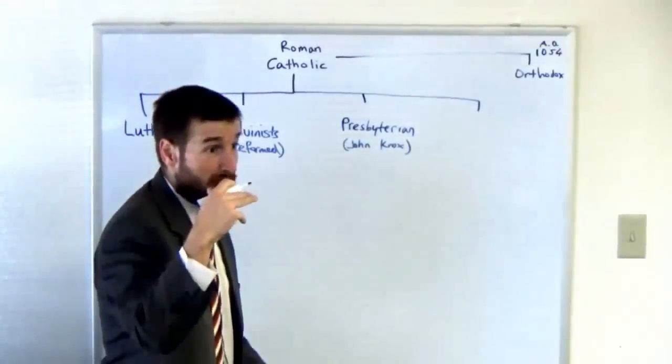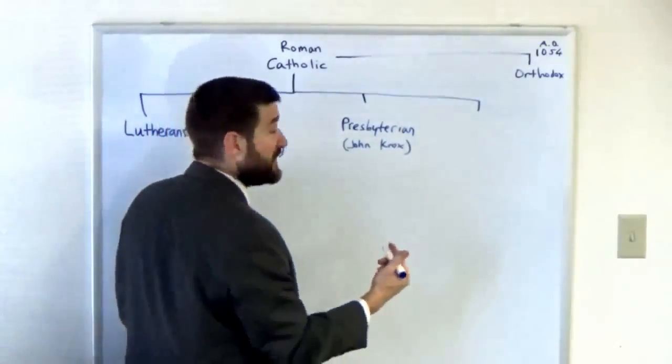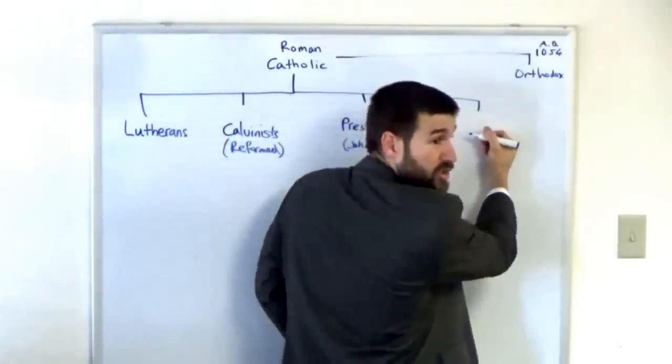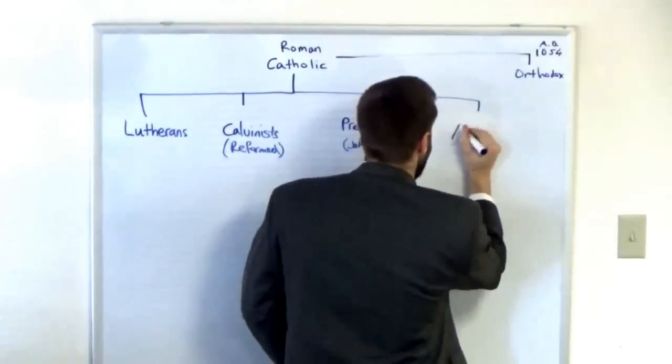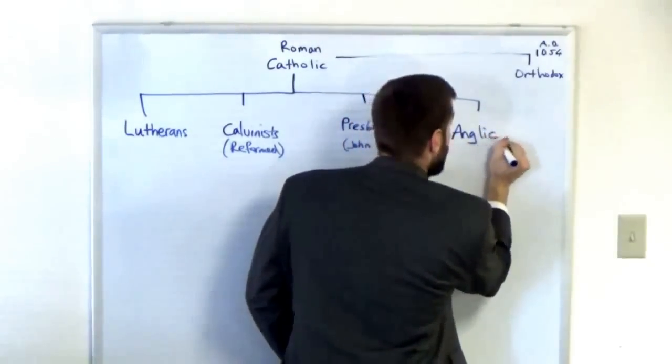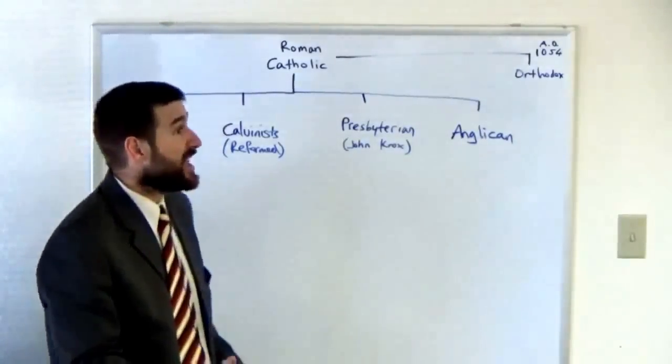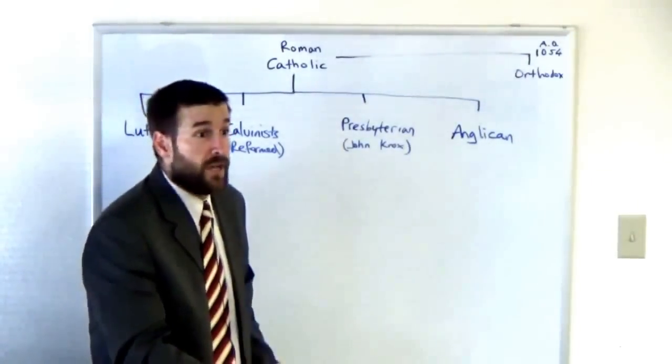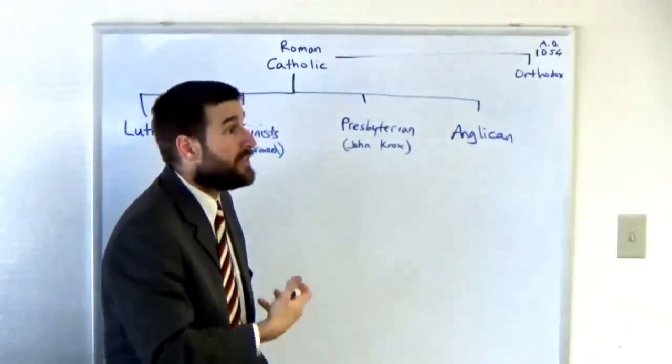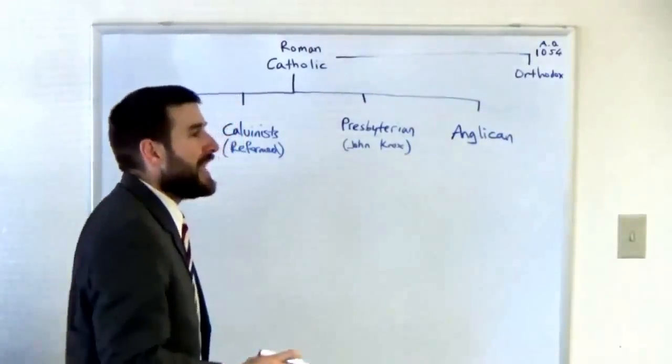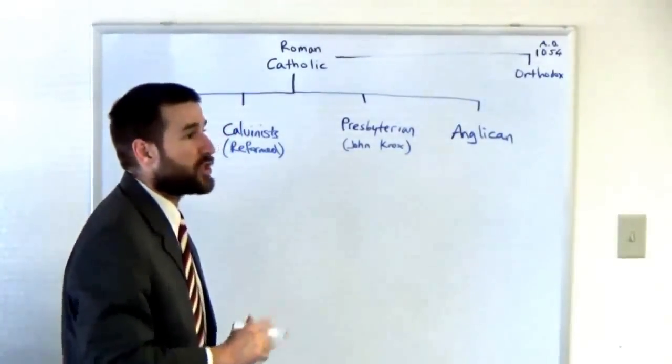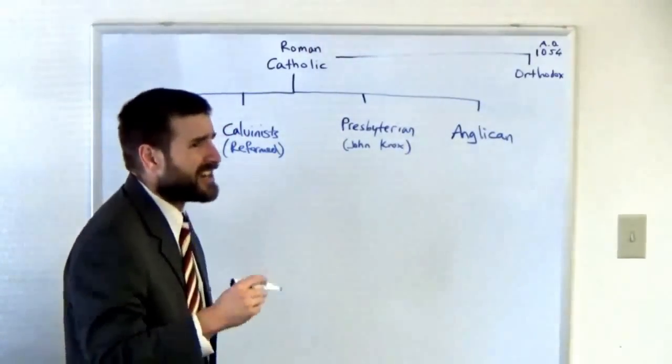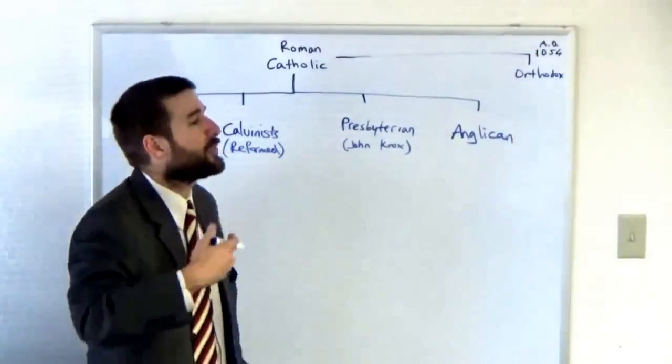Then you have another group during this Protestant Reformation of the 1500s known as the Church of England or Anglican. The Church of England was started by Henry VIII. Henry VIII wanted to divorce his wife, the Pope would not grant him that divorce, so he broke off. In the real early days their doctrines were pretty much identical to the Roman Catholics.